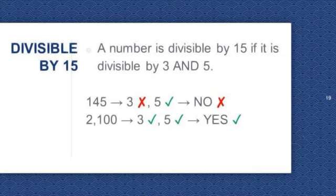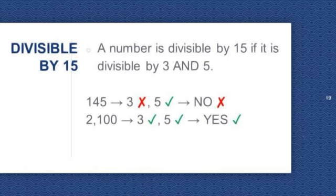Divisible by 15. A number is divisible by 15 if it is divisible by both 3 and 5. 145 is divisible by 5 but not divisible by 3, so it's not divisible by 15. 2,100 is divisible by 3 and 5, so it's divisible by 15.